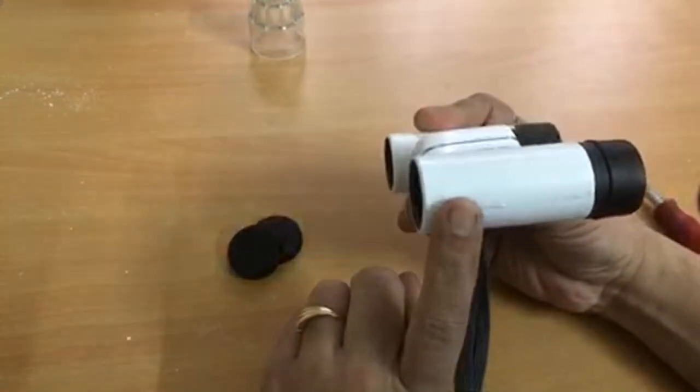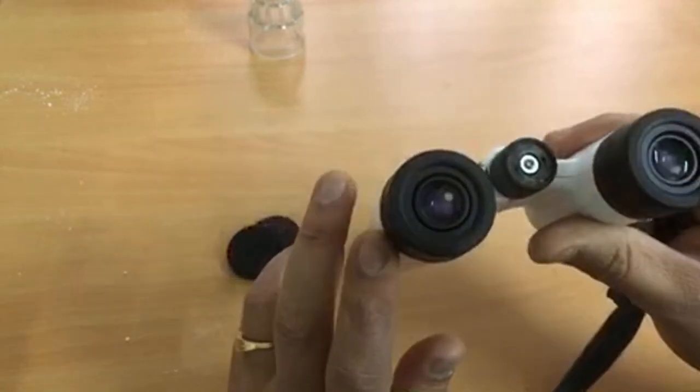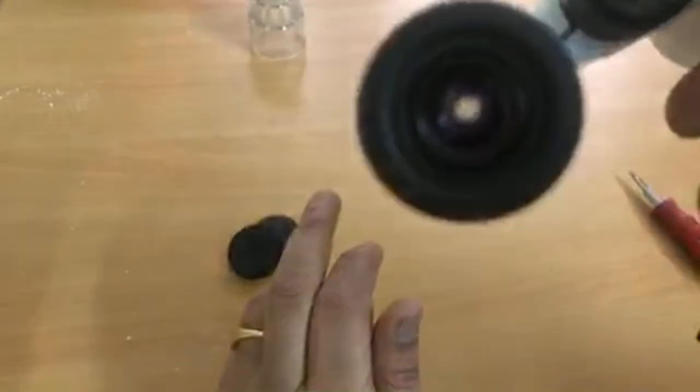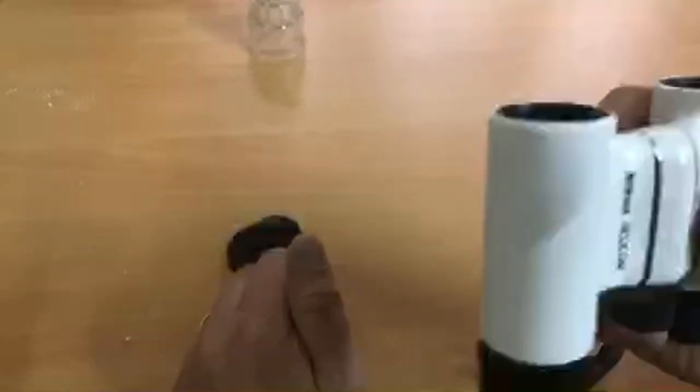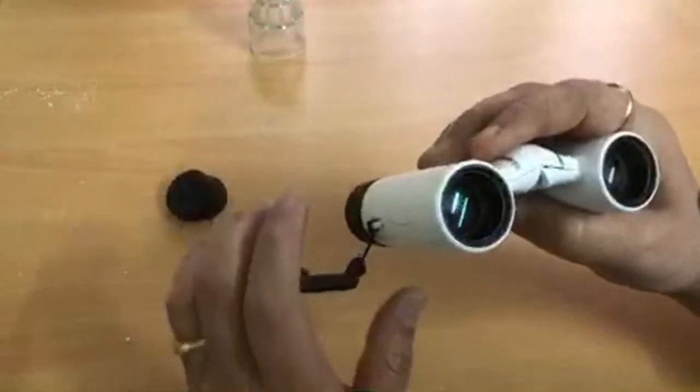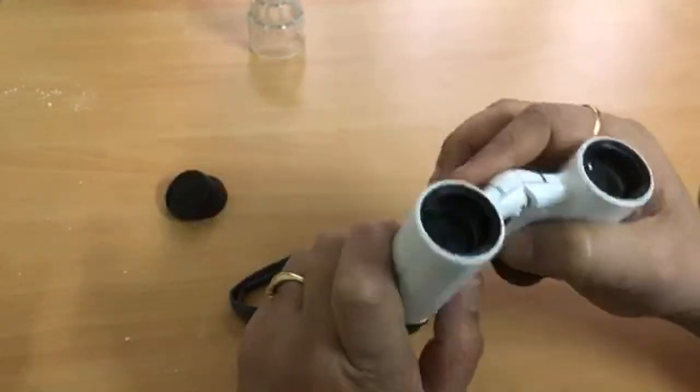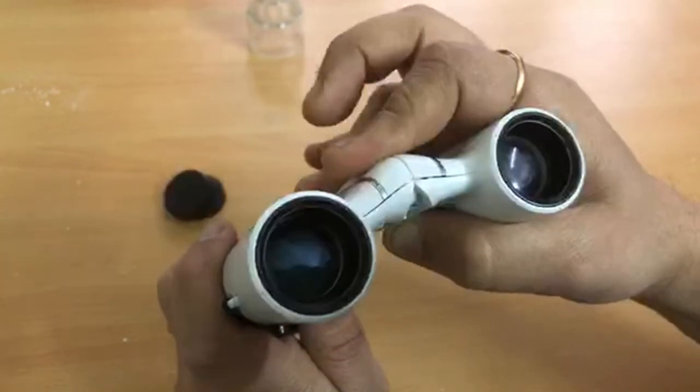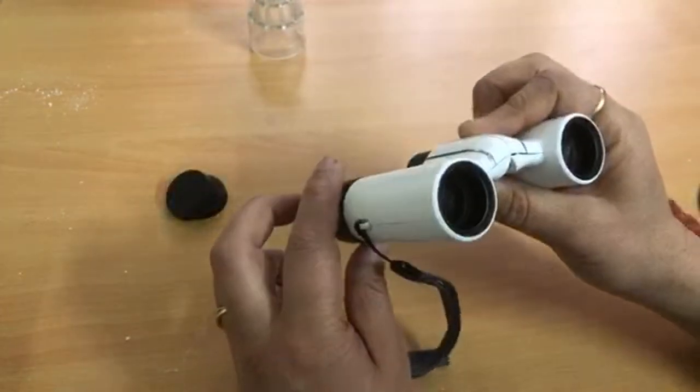Now as we know, a binoculars comprises of a set of lenses. This is the objective lens which is directed towards the object that we intend to view, this is the eyepiece which we bring close to our eyes, and once we get a view from the other end we bring it in focus by rotating this knob which brings the lenses forward or backward thereby bringing that particular object in focus. But what happened with this particular unit was that these lenses, the objective lenses, they had somehow stopped moving despite the knob being moved. This means that there is a problem with the adjustment.